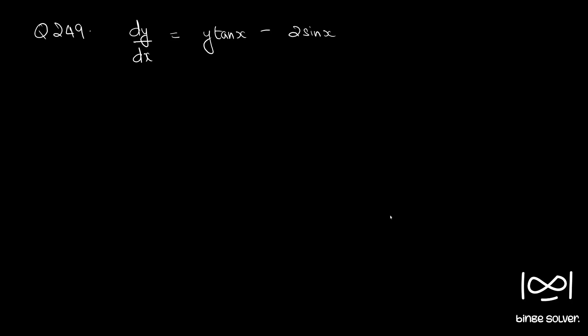Question number 249. dy by dx is equal to y tan x minus 2 sin x.